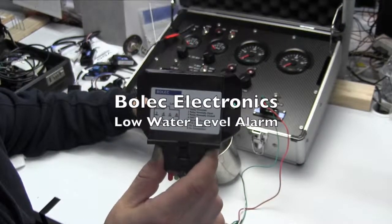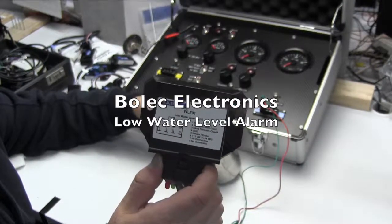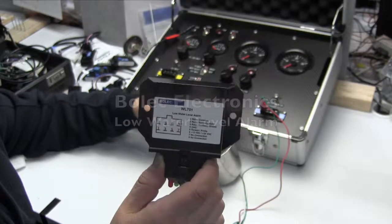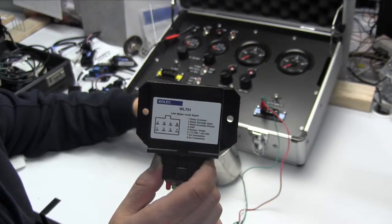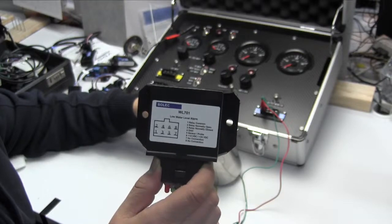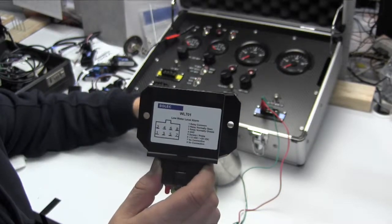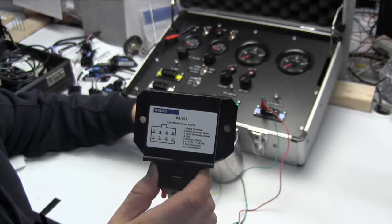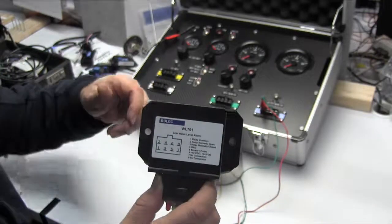The Bolleck WL701 12-24 volt low water level alarm. The WL701 module is a 12-24 volt low water level alarm designed to protect your engine from catastrophic failure.